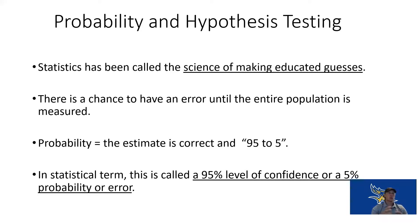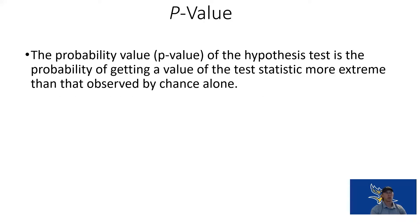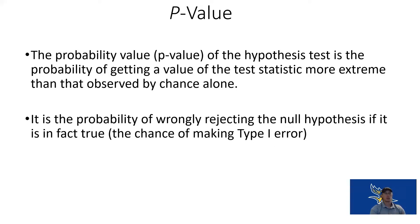Now let's look at the probability of hypothesis testing. Statistics is a science of making an educated guess — we take a sample and create a possibility that our hypothesis is correct. The confidence we want is 95%, which means a 5% probability of type one error — our alpha level. We want to be 95% confident that we did not make a type one error and what we found is true. That probability is our P value.